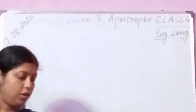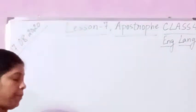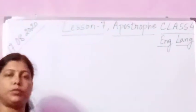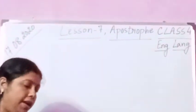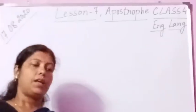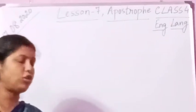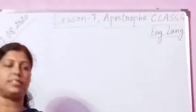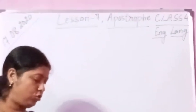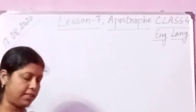Good morning children. We shall continue lesson 7 on apostrophe. We were doing the contracted forms in the previous class. I have already taught you exercise D, so today we are going to do exercise E.